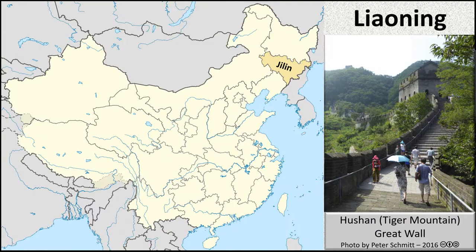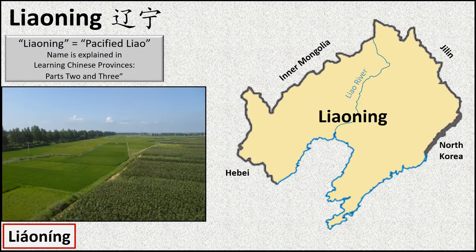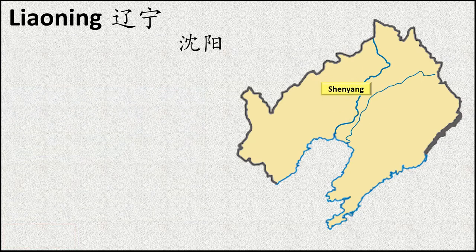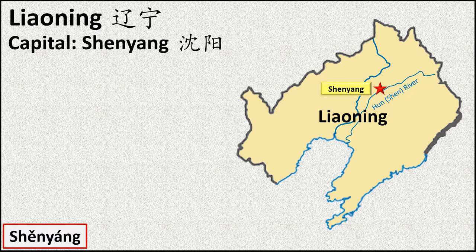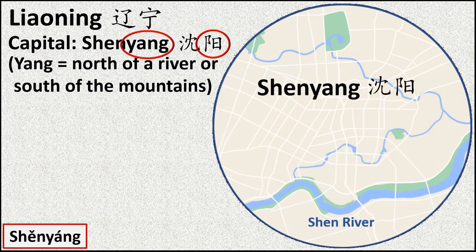South of Jilin, we come to the province of Liaoning. The Liao River flows south through the middle of this province — the pacified Liao. Its capital city lies north of the Hun River. Another name for this part of the river is Shen. We have previously explained that yang refers to a city north of a river and/or south of mountains. So the name of the capital is quite logical: Shenyang.